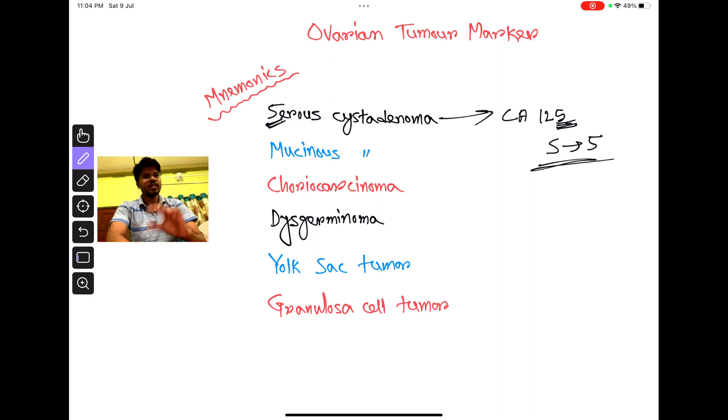Now mucinous cystadenocarcinoma marker is CA 19-9. How to remember it: mucin, mucin 9, mucin rhyming with 9.